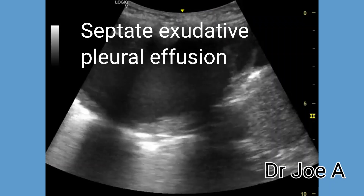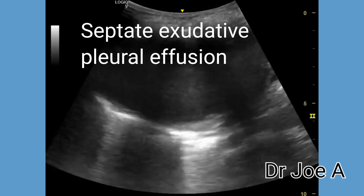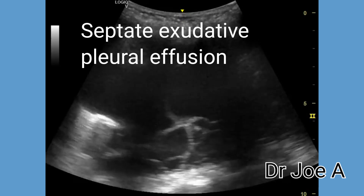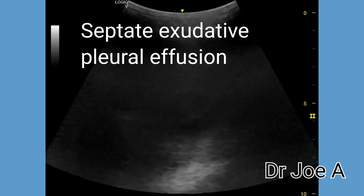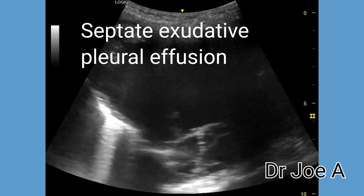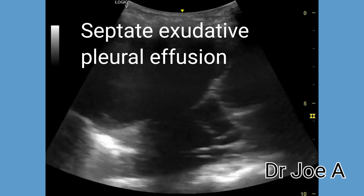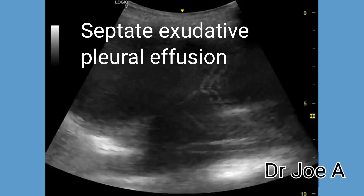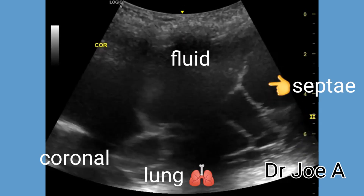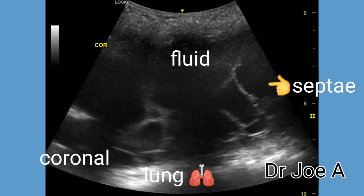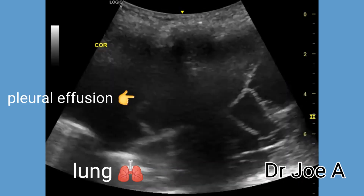This is a patient with a large left-sided exudative septate pleural effusion. The effusion appears to be measuring more than 15 cm long and up to 7 cm in depth. Multiple thin septae or loculations are present throughout the collection. The pleural effusion is seen as an anechoic collection between the chest wall and the lung, displacing the lung medially with multiple echogenic septations within the effusion.